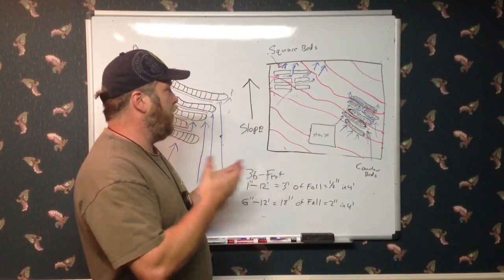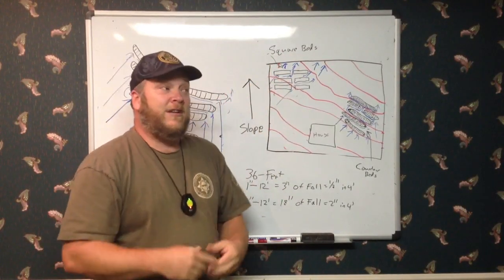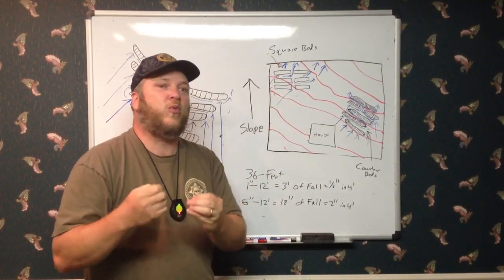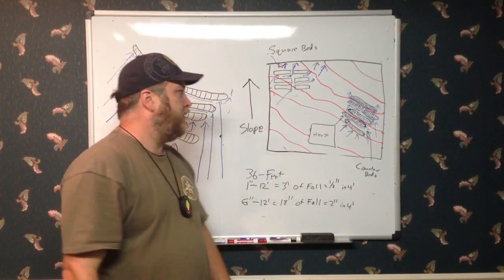What do people do? They square the garden based on the house and the fence. They want everything to be symmetrical. Nature doesn't work that way. Nature works with patterns, dynamic patterns, not straight lines.